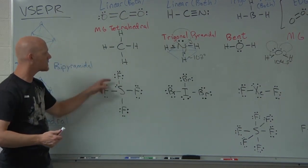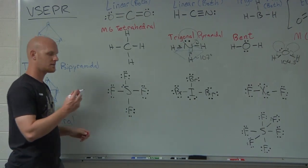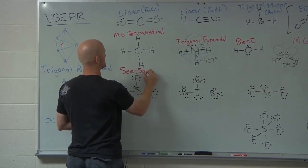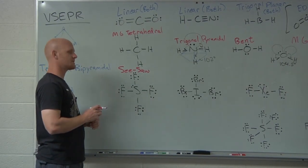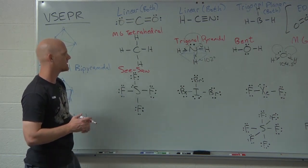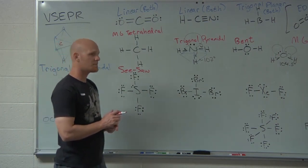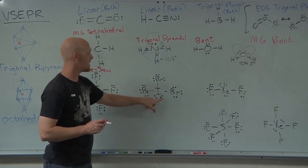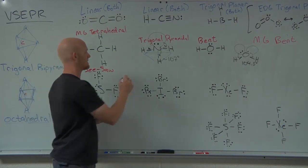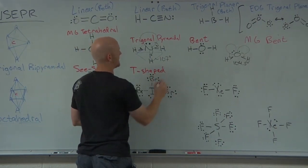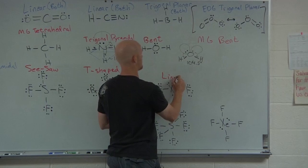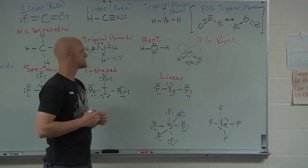With five total domains and one non-bonding, the molecular geometry is called seesaw (also called sawhorse — same thing). It looks like a sawhorse from a carpentry workshop when turned sideways. With five domains and two non-bonding, it's called T-shaped. With five domains and three non-bonding, it goes back to being linear.